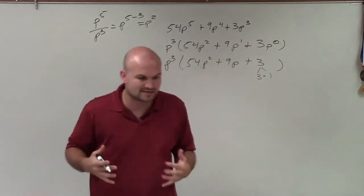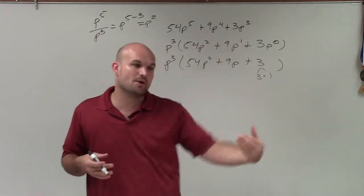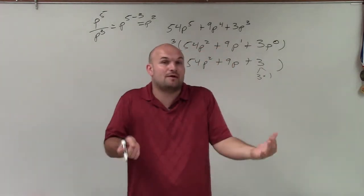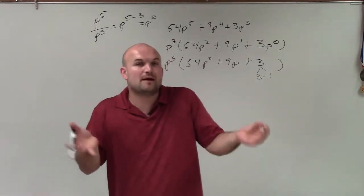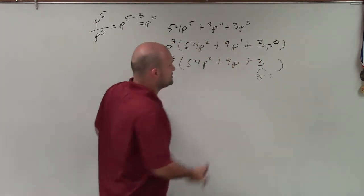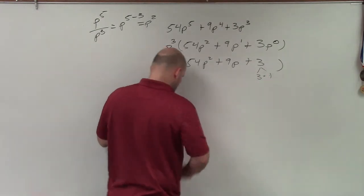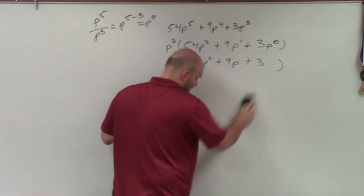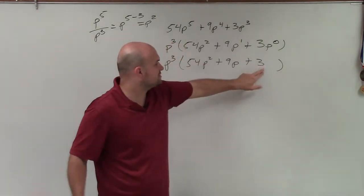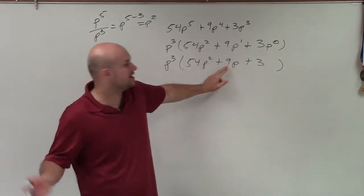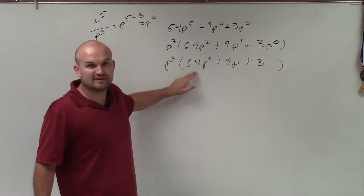Now when we're looking for a greatest common factor, we always want to look at the smallest number and say, all right, what are the factors of that? What are the largest factors of that that we can divide into all the other numbers? So obviously, 1 is a factor of everything, so we're not going to be concerned about 1. We just want to look at the factor of 3. Is 3 a common factor of 9? Yes, right?